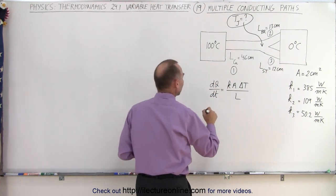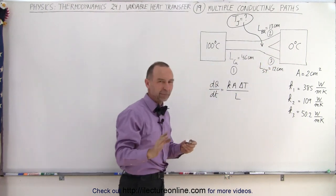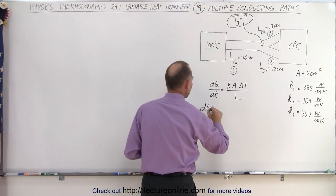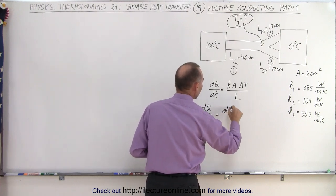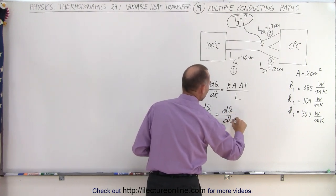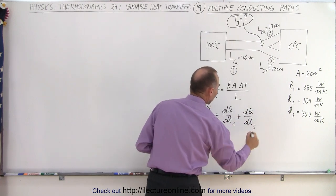If we label the paths 1, 2, and 3, that makes it easier. We can then say that dQ/dt of path number 1 must equal the sum of the dQ/dt's of the other two paths, 2 and 3.